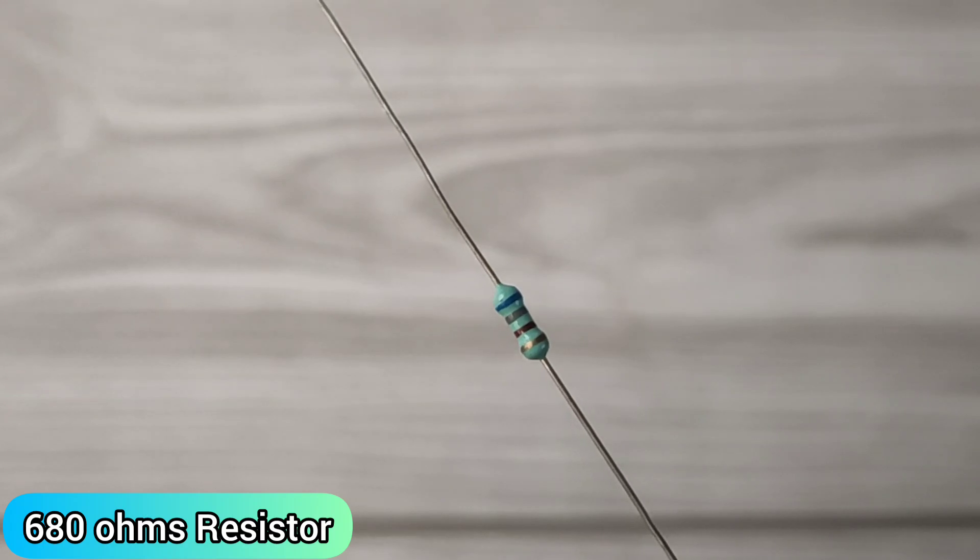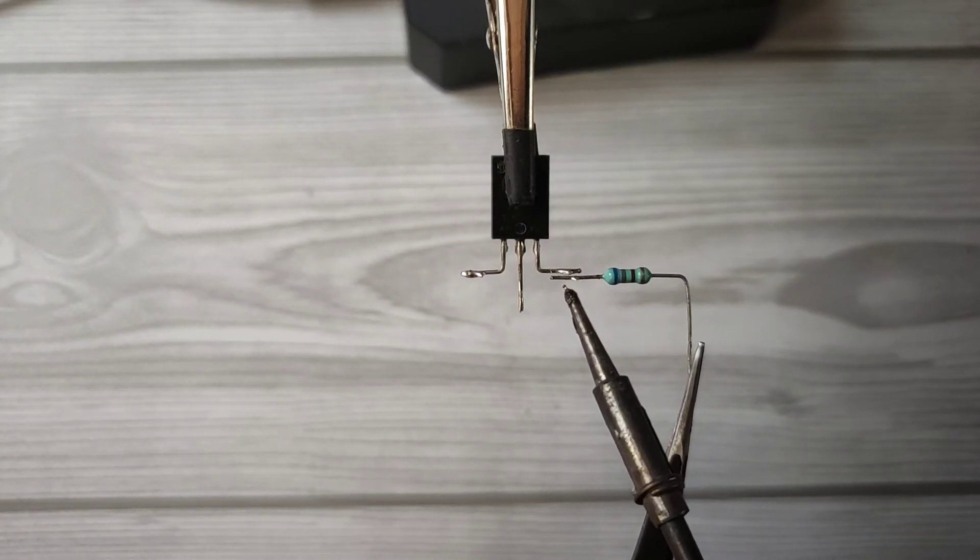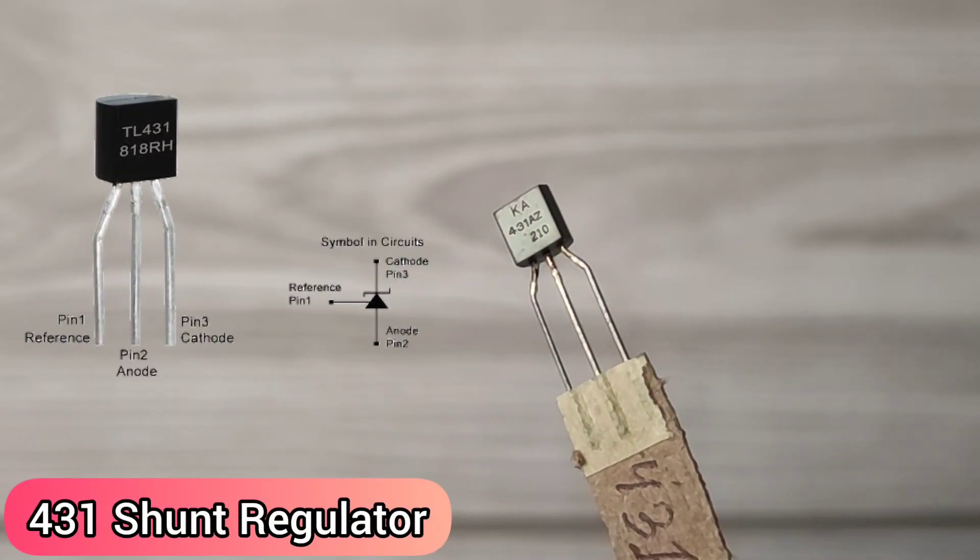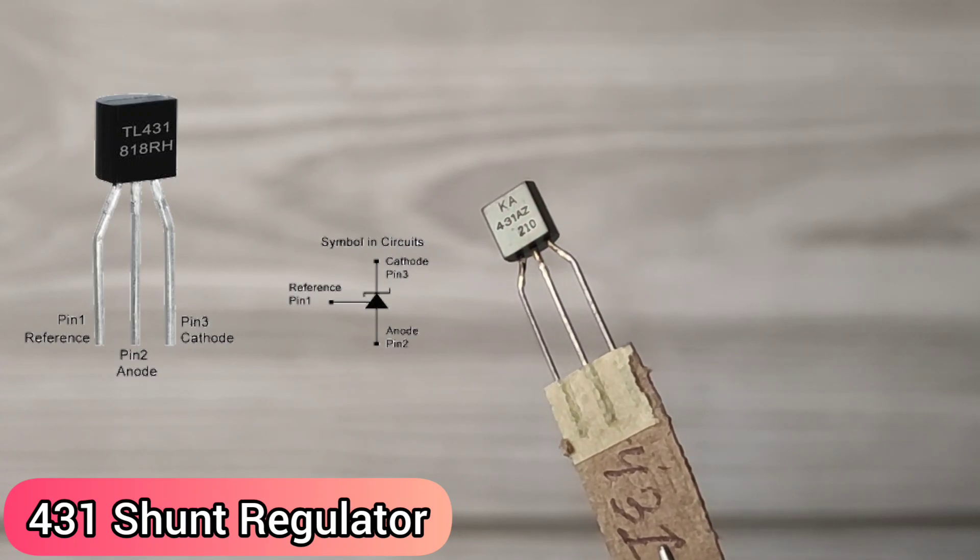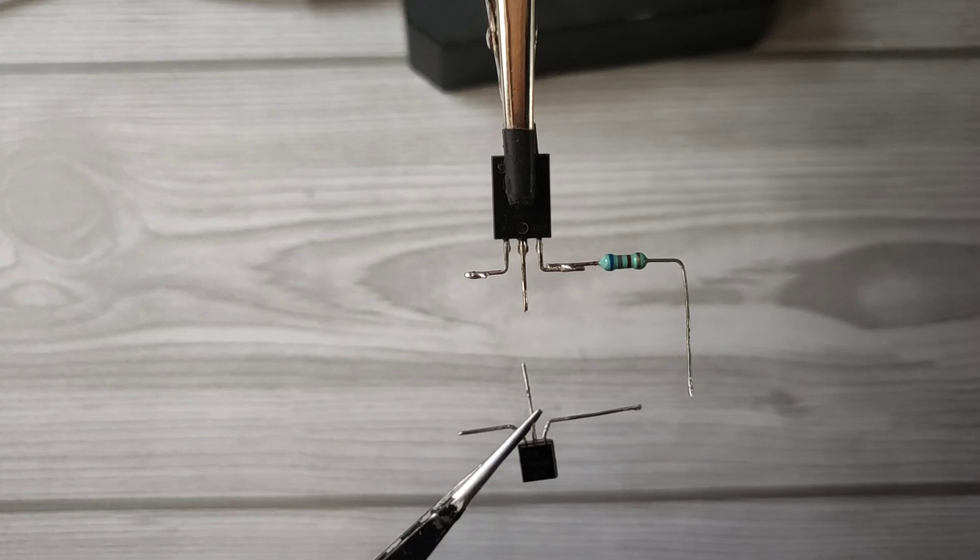Take a 680 ohms resistor and solder on the emitter of the transistor. Take a 431 shunt regulator and solder pin 1 with the 680 ohms resistor.